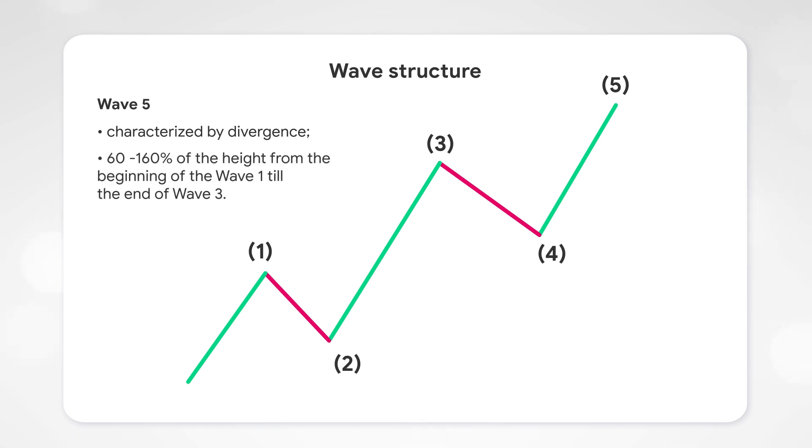Usually between 60% and 160% of the height from the beginning of the wave movement till the end of wave three. If wave five ends at the top of wave three or lower, then it is called a truncated wave.